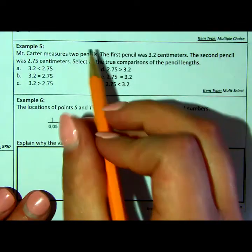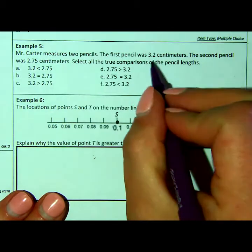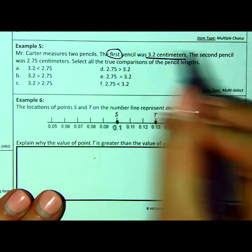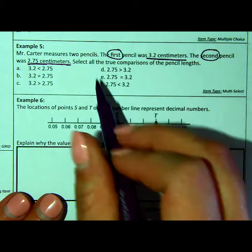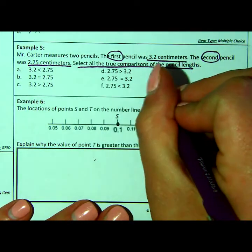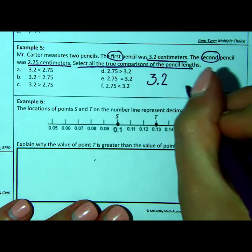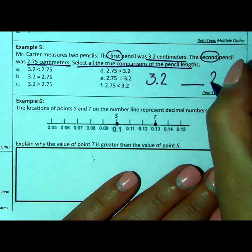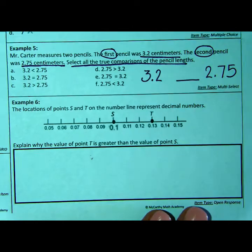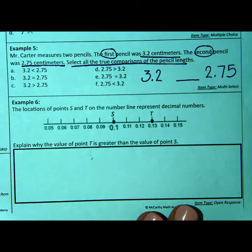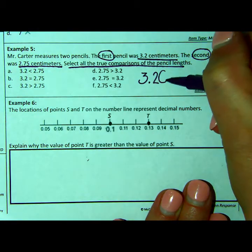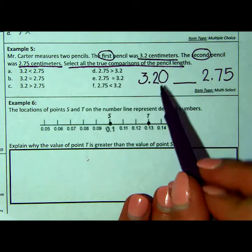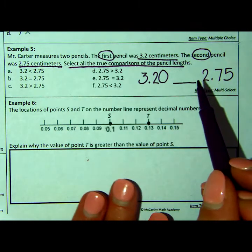Number 5. Mr. Carter measures two pencils. The first pencil was 3.2 centimeters. So that's pencil number 1. The second pencil was 2.75 centimeters. Select all the true comparisons of the pencil length. So we have 3.2 and we are comparing that to 2.75. Well, if we have hundredths in one place and then tenths in the other, kind of like the fractions when you guys were working with tenths and hundredths, again, we need to add this 0 here to create that equivalent fraction or hundredths and hundredths so that we can compare.